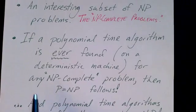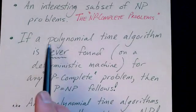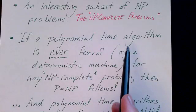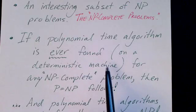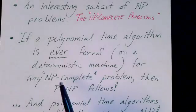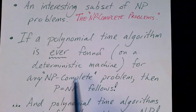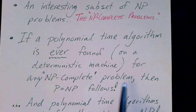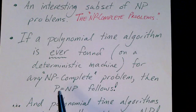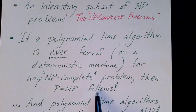Well, if a polynomial time algorithm on a deterministic machine is ever found for any problem in the NP-Complete subset, then it follows that P equals NP, which would be an extraordinary result.